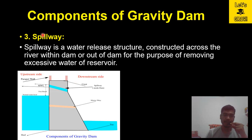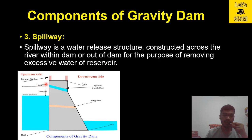The third component is the spillway. A spillway is a water release structure constructed across the river, either within the dam or outside of it, for the purpose of removing excessive water from the reservoir. Whenever excess water accumulates in the reservoir, a provision must be made for its exit, and that is the function of the spillway.